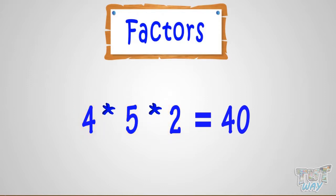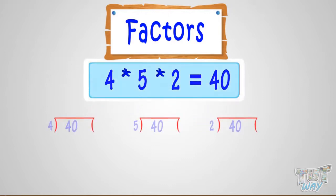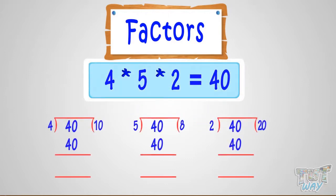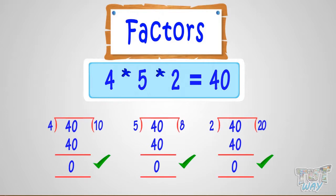A number is said to be the factor of another if it can divide the other number completely. Here, 4, 5, and 2 can divide 40 completely — that is, no remainder will be left if we divide 40 by 4, 5, and 2.